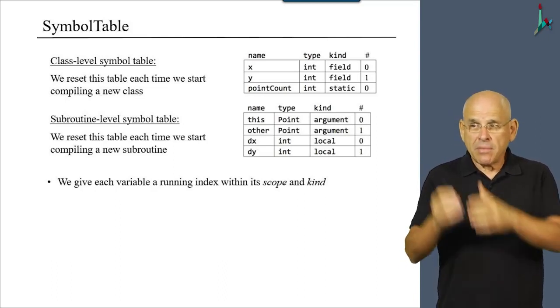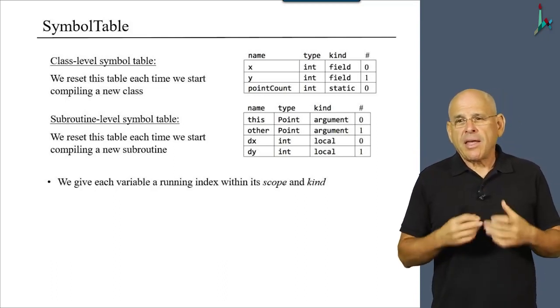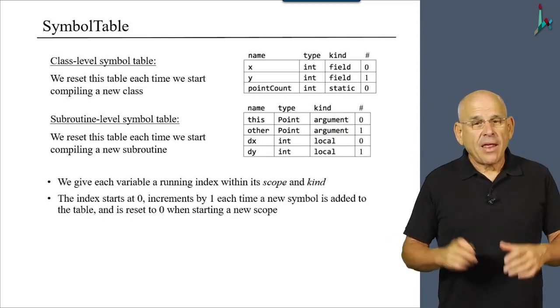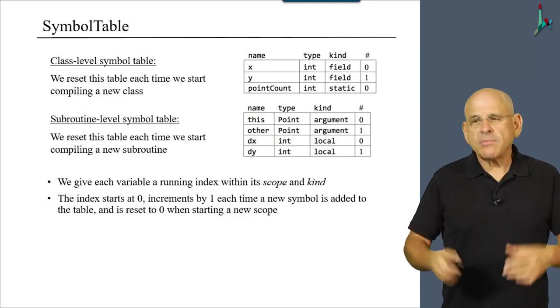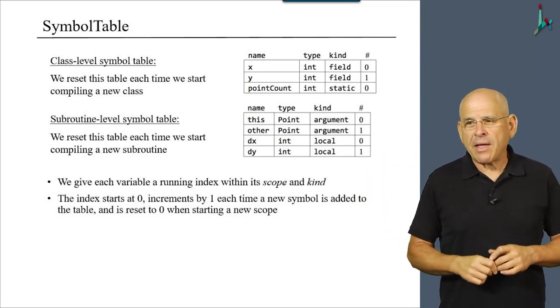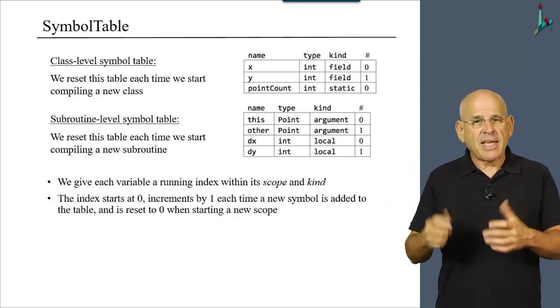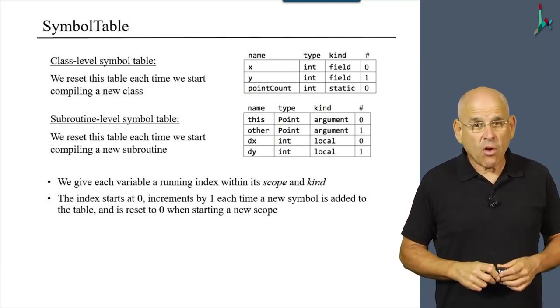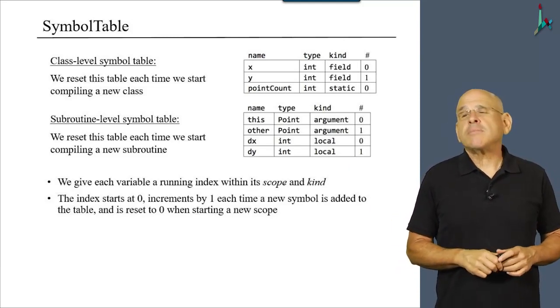Now within the symbol tables, the compiler, as you see here, gives each variable a running index within its scope and kind. The index starts at zero. It is incremented by one each time a new symbol is added to the table. And it is reset to zero when we start a new scope, a new symbol table.